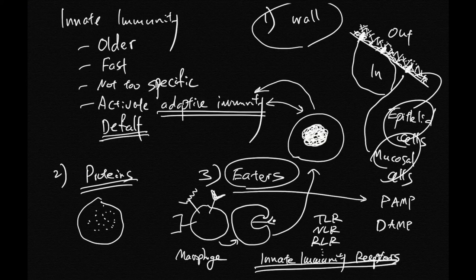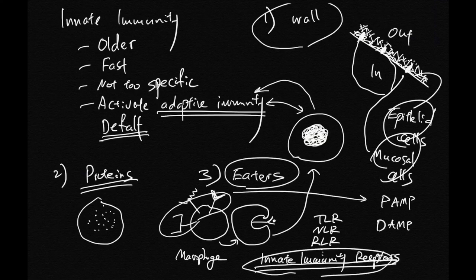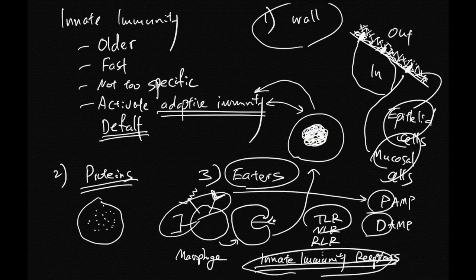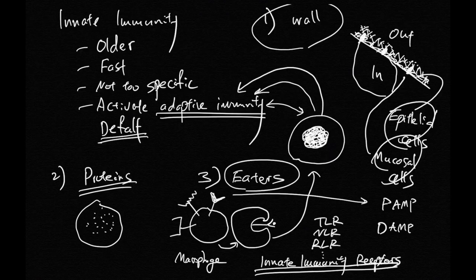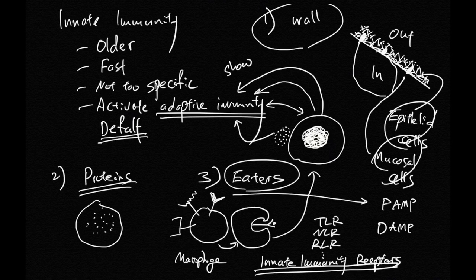You got the eaters like macrophages, dendritic cells as well, that have special innate immunity receptors like toll-like receptors and other ones that can bind to pathogen molecular patterns or damage molecular patterns leading to engulfing. And most innate immunity cells like macrophages, dendritic cells can talk to the adaptive immunity cells by showing the piece that these innate cells engulfed or secrete molecules—chemokines, cytokines—that can stimulate the adaptive immunity cells.